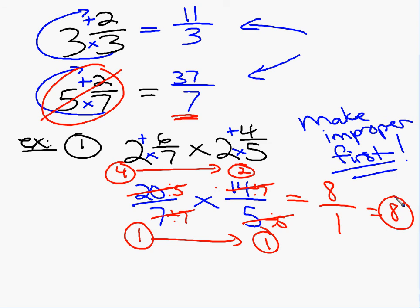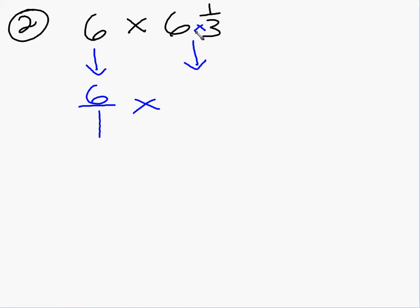So when you have mixed numbers, you have to make them improper first. Let's do one more problem: 6 times 6 and 1 third. Well, this one I've got two things going on. I have a whole number. What do I do with the whole number? Put it over 1. 6 over 1. Times what do I do with the 6 and 1 third? Make it improper. 3 times 6 is 18. 18 plus 1 is 19 over 3. We have to make it improper before I ever do the problem. You cannot multiply or divide with mixed numbers.